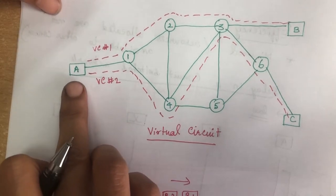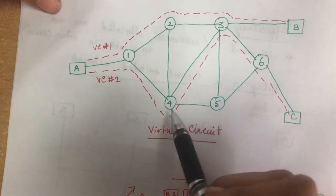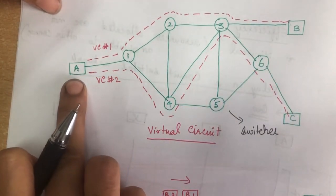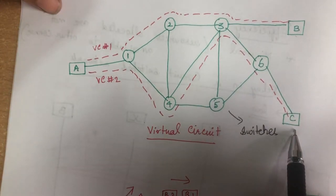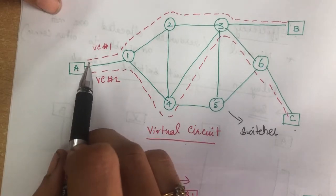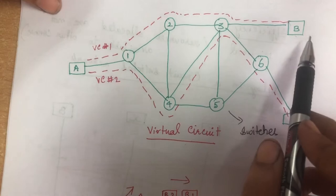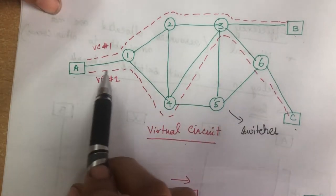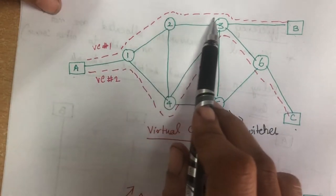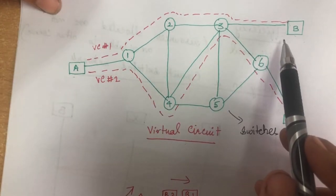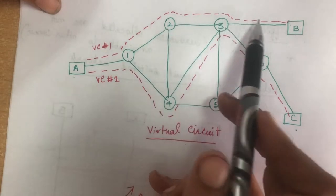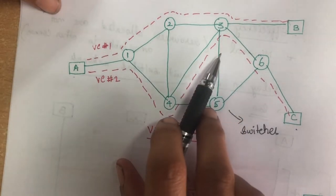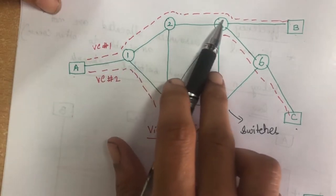In the virtual circuit approach, you can see there are six switches connecting the end systems A, B, and C. A pre-planned route will be established between the end systems. If A wants to communicate with B it follows one particular path, and if A wants to communicate with C it follows a different path. After establishing the route, all the packets will follow the same route and reach the destination. One route is established, and then all packets are sent along that same route.